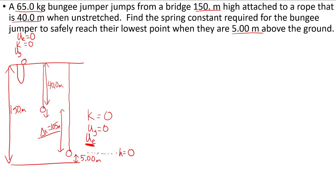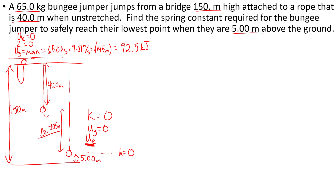If h equals 0 at 5 meters above the ground, then the jumper starts 145 meters above that reference. Gravitational potential energy is mgh: 65.0 kilograms times 9.81 meters per second squared times 145 meters, which gives 92,500 joules.